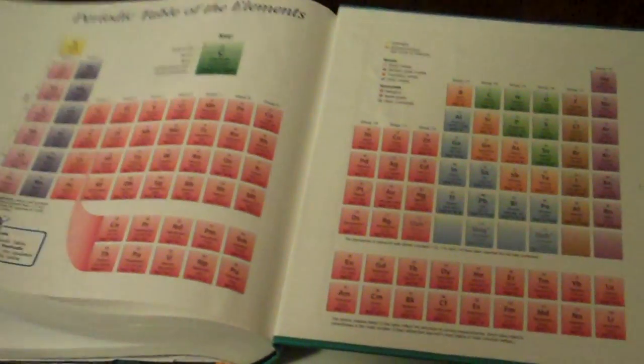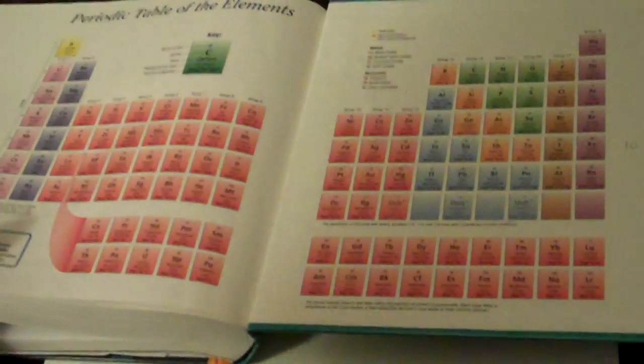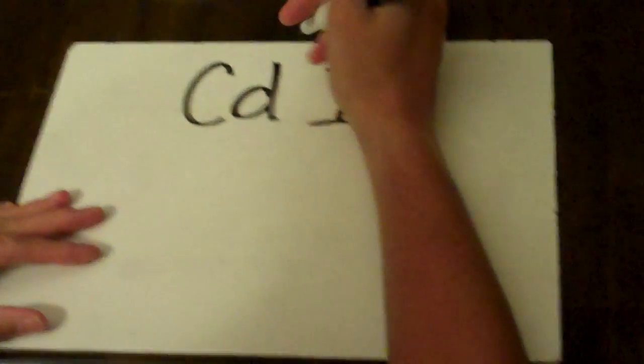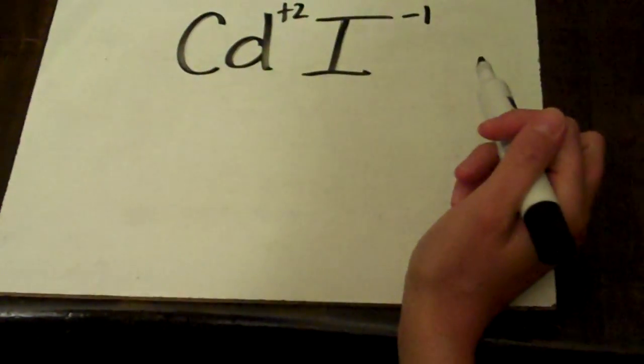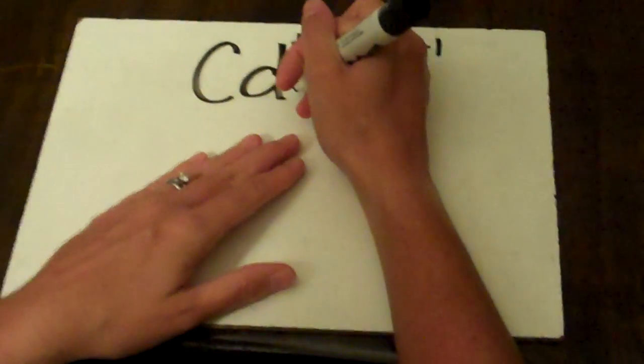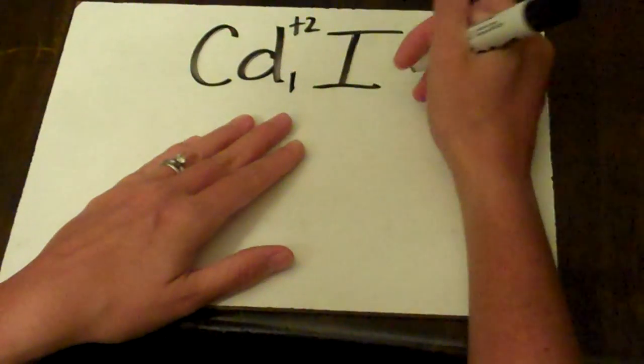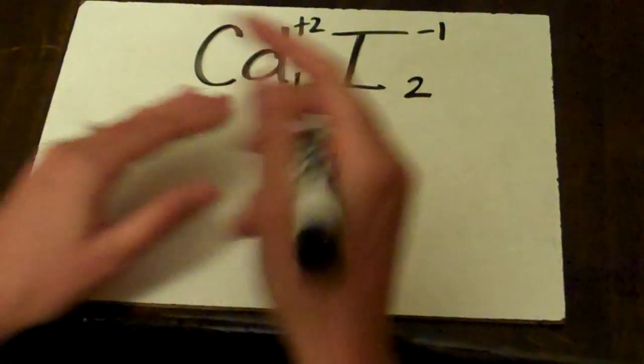And actually, you're going to have to be given the information that it's cadmium 2. So it's cadmium 2, it's plus 2. And then iodine we found over here to the left is minus 1. Obviously, the least common multiple here is going to be 2. So we're going to have just 1 cadmium and we're going to need 2 iodines.